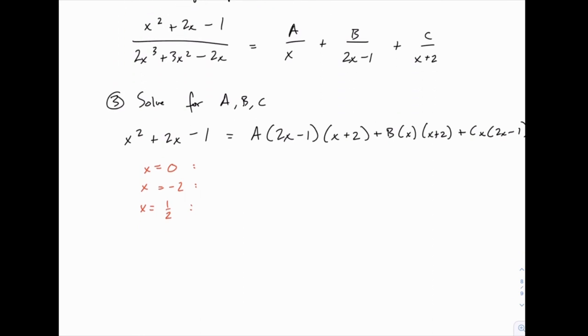So when x equals 0, the left hand side just leaves us with negative 1. And on the right hand side, the terms with x in them disappear. So we'll just have A times negative 1 times positive 2. So -2A equals -1, or A equals 1/2.